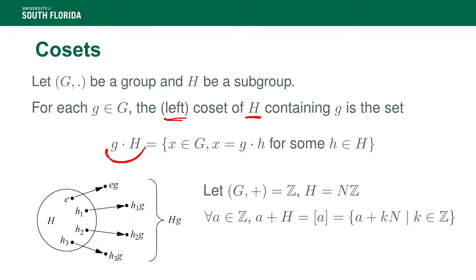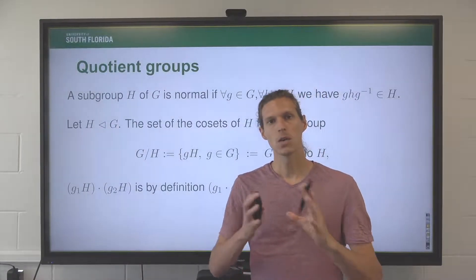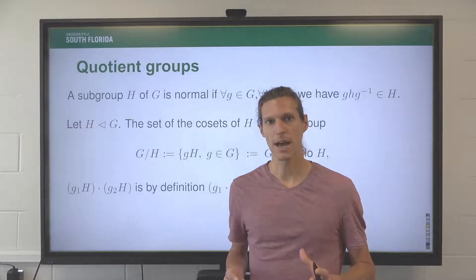So a very important example of a coset, which we're already familiar with, is the congruence classes. If I look at the group of integers and the subgroup of the form N times Z, then the coset A plus H, note that here we're denoting things additively because the law is just the addition, then the coset A plus H is simply the congruence class of A modulo n.